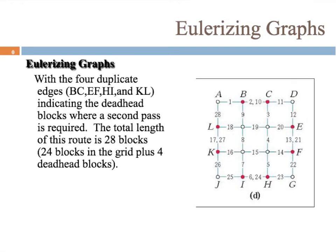Finishing up this particular problem, we have 28 blocks that we have to go through to cross each edge. 24 of them are regular, and then we have just four deadhead blocks, which are the duplicate edges we had to add on to make sure this could be done.